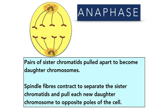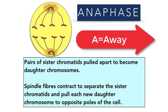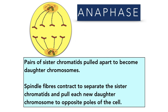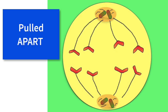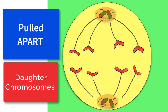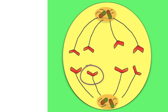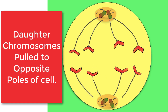The next stage is anaphase — think of A for 'away'. Previously in metaphase, those chromosomes consisting of pairs of sister chromatids were lining up across the middle of the cell with spindle fibers attached to each centromere. Now those pairs of sister chromatids separate to become daughter chromosomes and are pulled to opposite poles of the cell. You identify anaphase by those pairs of sister chromatids pulled apart to form single-leafed daughter chromosomes, pulled by contracting spindle fibers to opposite poles.